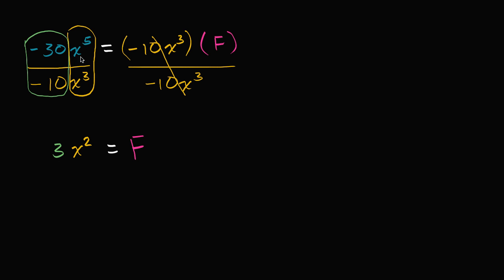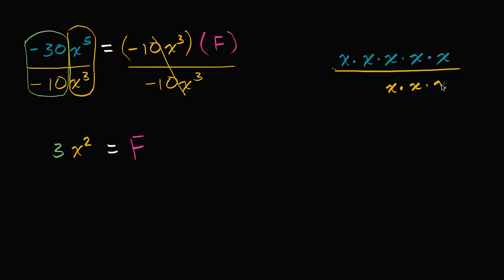You could think of it in terms of exponent properties — we subtract the exponents: x to the five minus three, which is x squared. Or you could think of it more concretely: on top you have x times x times x times x times x — five x's — and on the denominator you have x times x times x. Those three x's cancel, and you're just left with x times x, which is x squared.